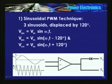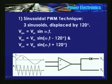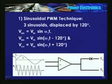The magnitude of the carrier wave is held constant while the magnitude of the modulating wave is variable. We define the modulation index M = Am/Ac — the amplitude of the sine wave divided by the peak of the triangular wave. The output voltage is proportional to the modulation index M.